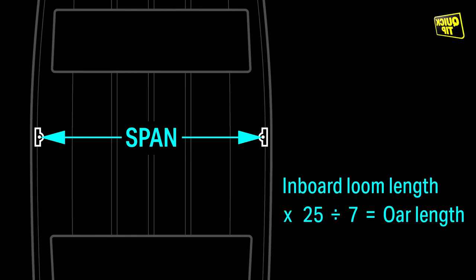Multiply the inboard loom length by 25, then divide that number by seven. The result is the proper oar length.